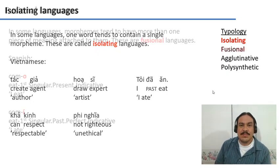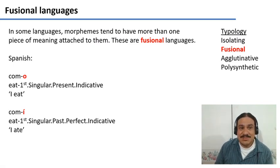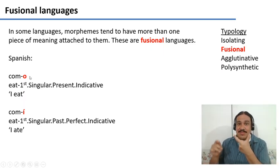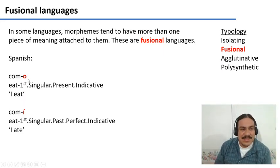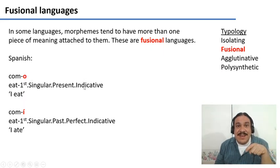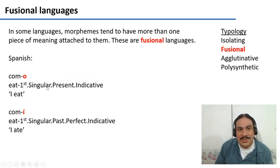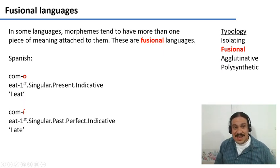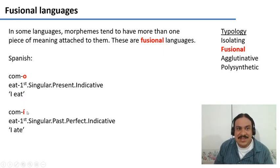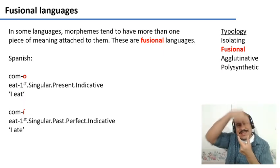Many languages you have studied are fusional languages: Spanish, English, French, Latin — most European languages. In fusional languages, you have one morpheme and stick a lot of meanings inside of it. In Spanish, we have the root 'com-' and the morpheme '-o,' which means first person, singular, present, and indicative — meaning 'I eat.' This little '-o' is doing a lot of heavy lifting with four meanings packed into it. The word 'comí' also has one morpheme doing a lot of work: '-í' means first person, singular, past, perfect, and indicative — meaning 'I ate.' One morpheme, lots of meanings stuck inside.